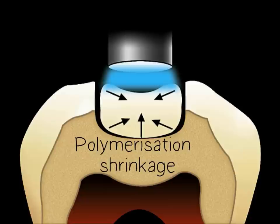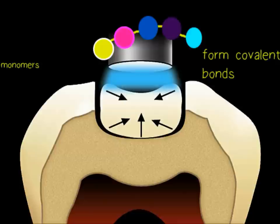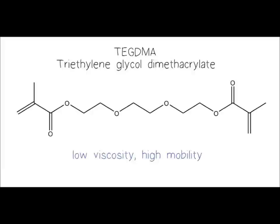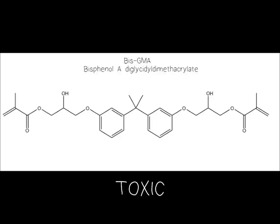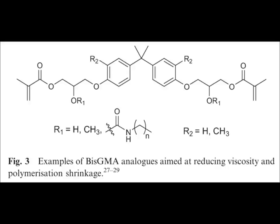Polymerization shrinkage is also another undesired problem. This happens because as covalent bonds form, the structure becomes closer together and the volume decreases. The presence of TEGDMA increases polymerization shrinkage due to its high mobility and therefore higher probability to form bonds. The toxicity of BisGMA, which incorporates a bisphenol A group, is also a concern.